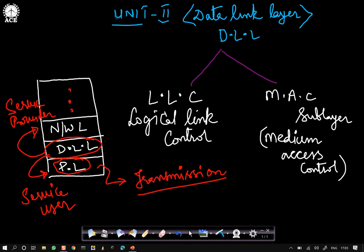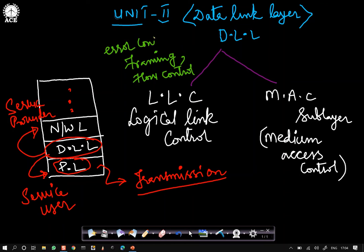The important functions of Logical Link Control include framing, flow control, and error control. These are the three important functions carried out by the logical link control sublayer, or generally what we call the data link layer.